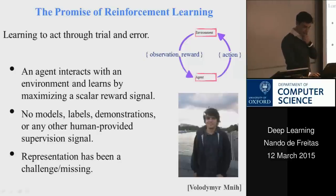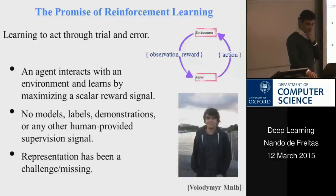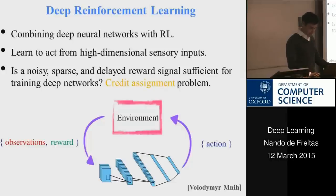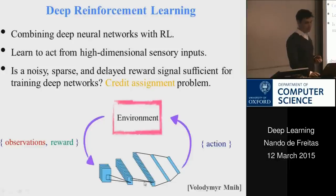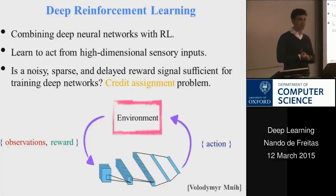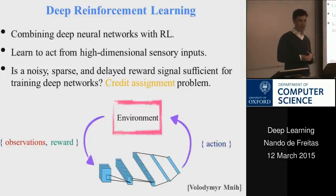Some of today's slides were produced by Vlad Mnih, one of the authors of a paper recently published in Nature covering reinforcement learning and deep learning. Our agent will basically be a neural network — for example, a convolutional network taking images from the environment and outputting actions — a creature that senses and acts on the environment to maximize some reward signal.